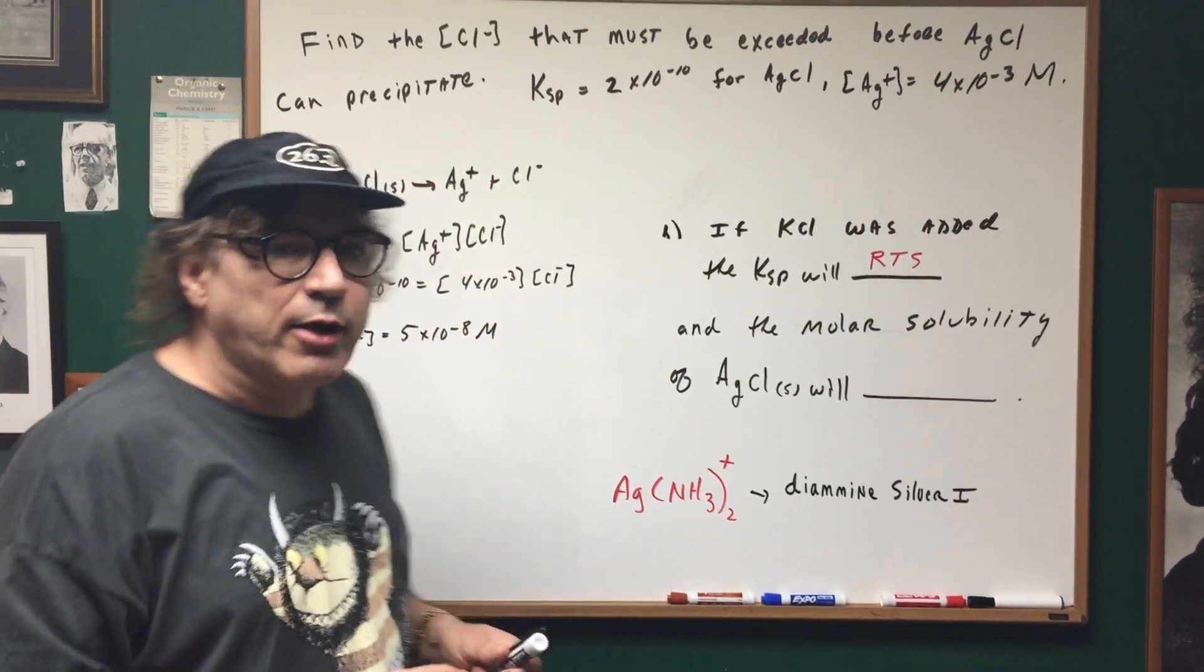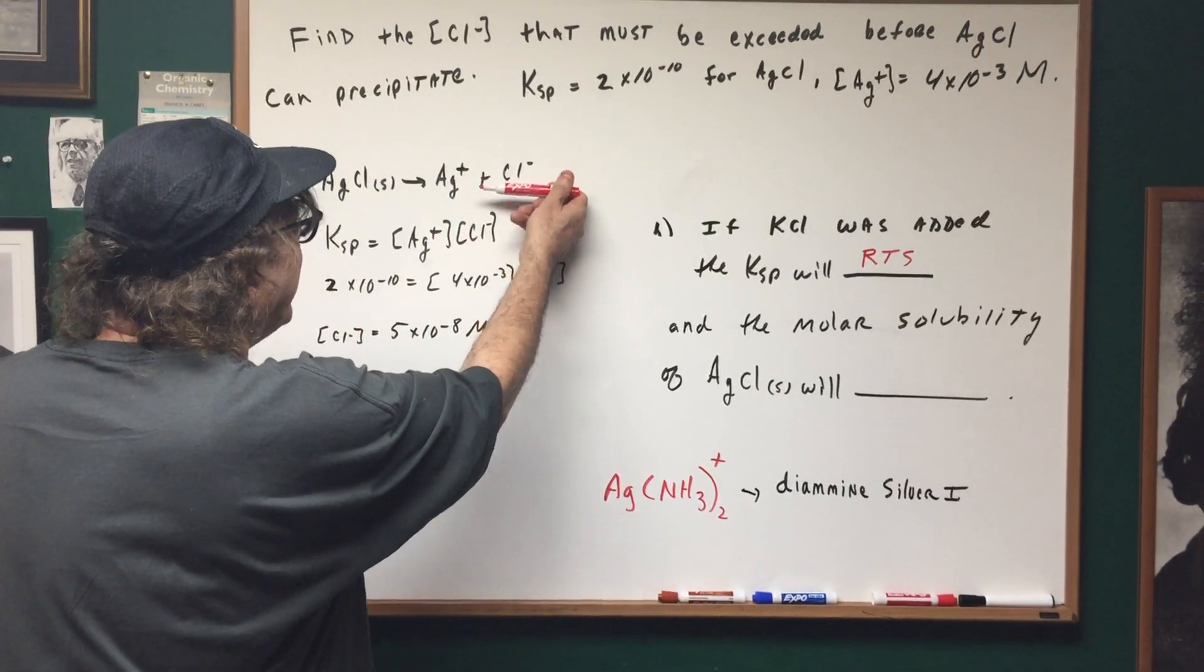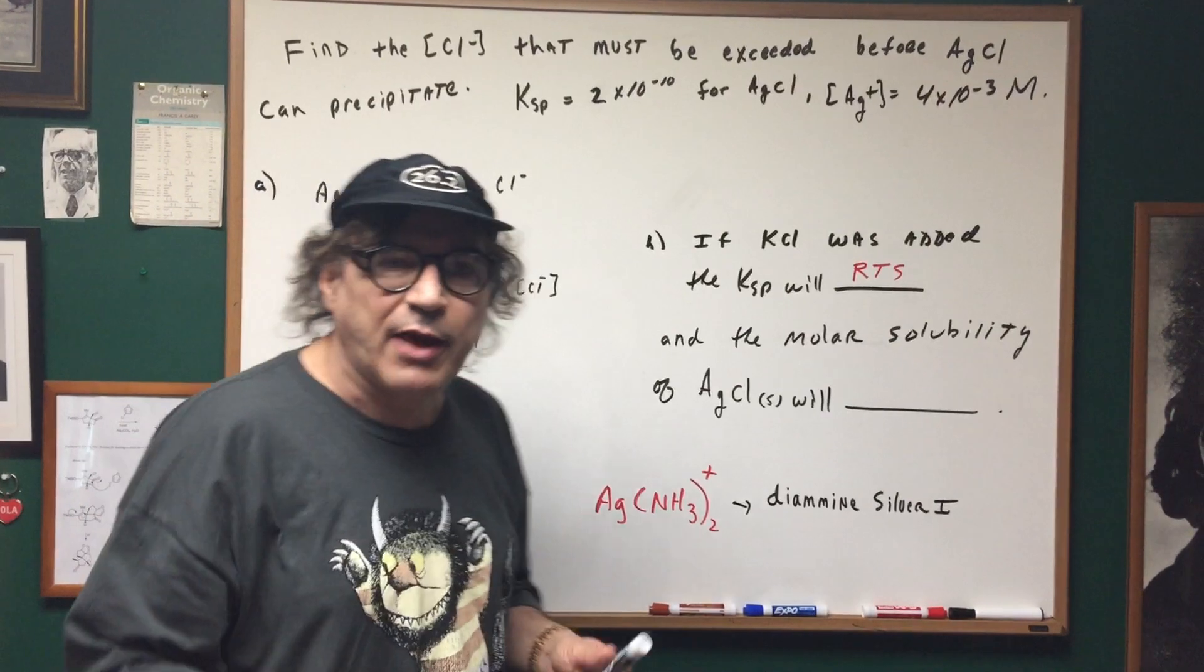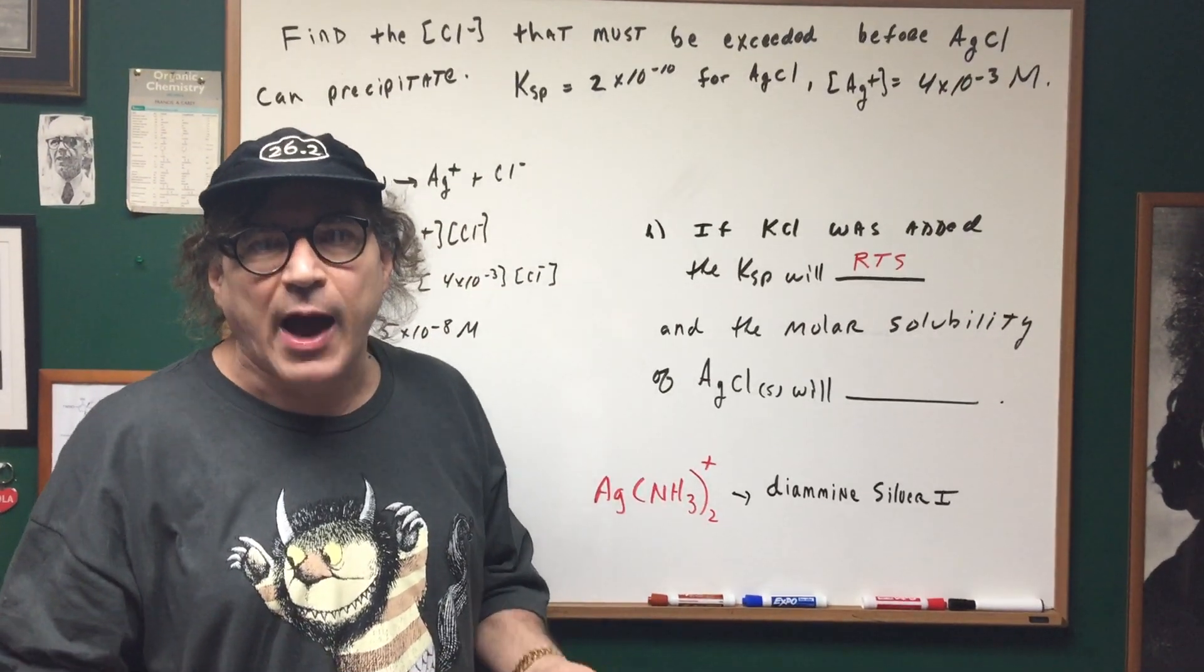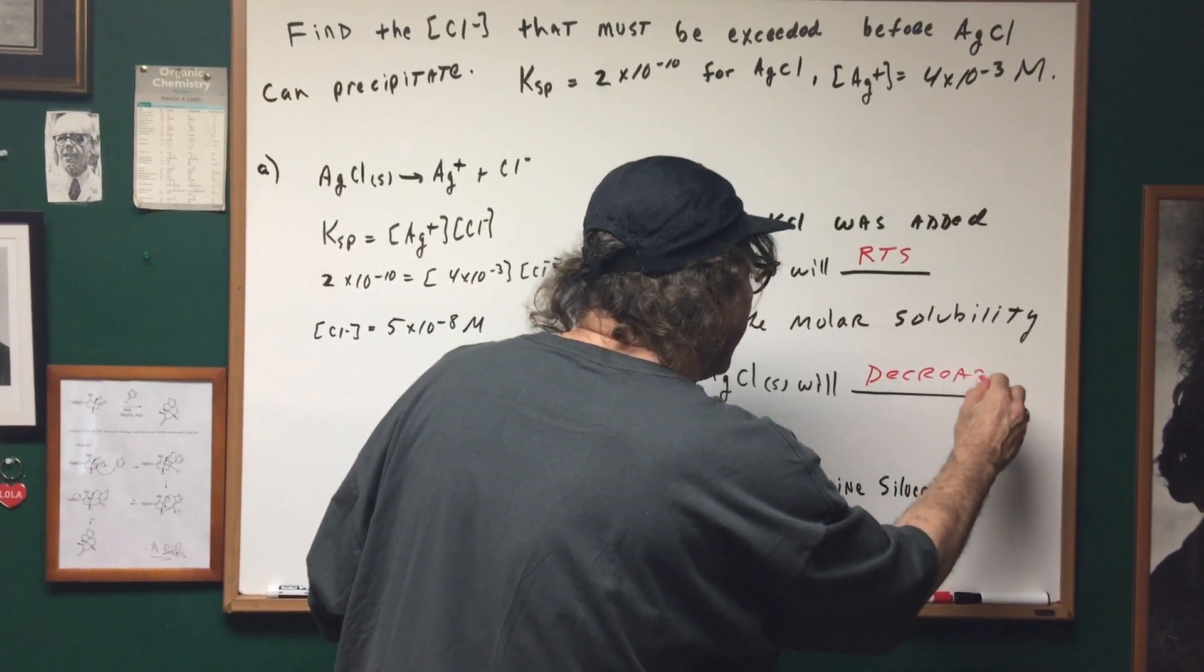Well, the chloride ion represents the common ion. If I put a common ion in here, the equilibrium shifts to the left, and if it shifts to the left it's going to make more of the solid. So therefore the solubility of it will decrease.